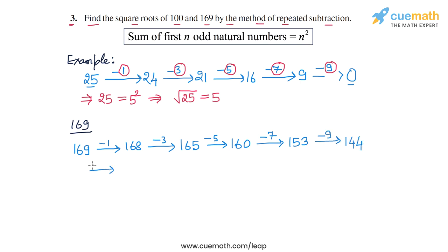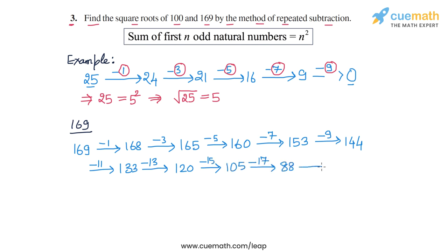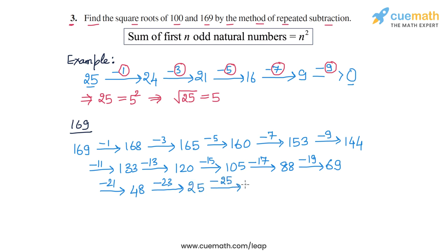Then we subtract 11, that gives us 133. Then we subtract 13, that gives us 120. Then we subtract 15, that gives us 105. Then we subtract 17, that gives us 88. Then we subtract 19, that gives us 69. Then we subtract 21, that gives us 48. Then we subtract 23, that gives us 25. And finally we subtract 25, and that gives us 0.